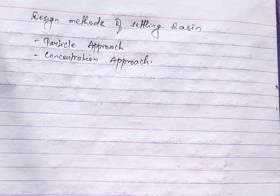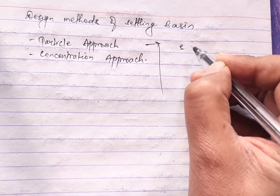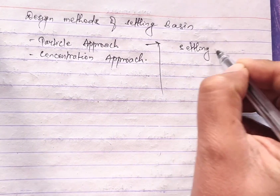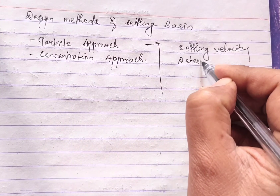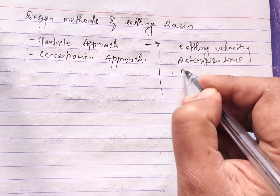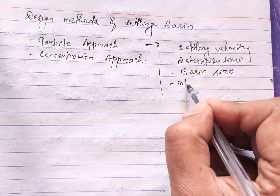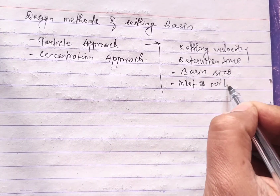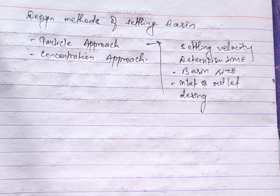In the particle approach, the major considerations are settling velocity, detention time, basin size, and inlet and outlet design. In the concentration approach, the major considerations are influent and effluent concentration, mass balance, detention time, and basin sizing.